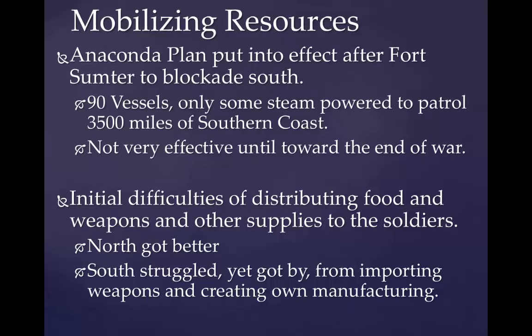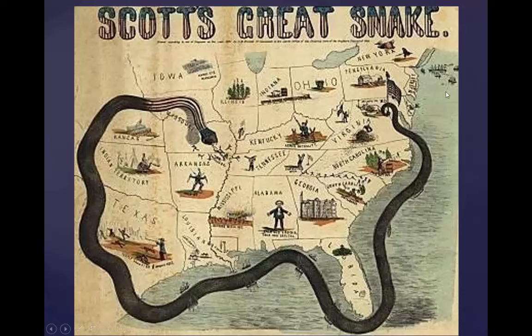Both sides had initial difficulties distributing food, weapons, and supplies to soldiers. As the war went on, the North actually got better at this due to their production, manufacturing, and railway system, while the South struggled. The cartoon shown here — Scott's Great Snake — is the Anaconda Plan by Winfield Scott, designed to choke off and strangle the South and prevent them from getting supplies. A little bit effective over a long period of time really starts to add up.